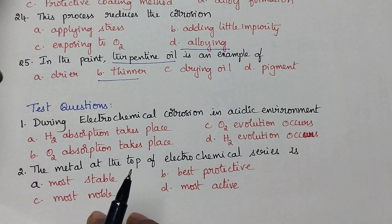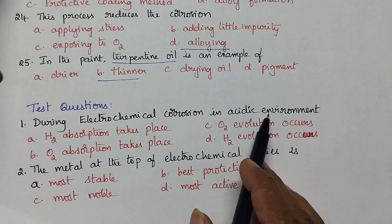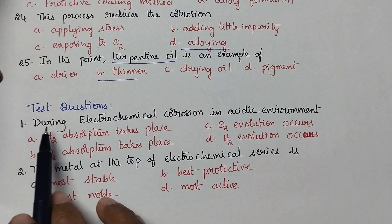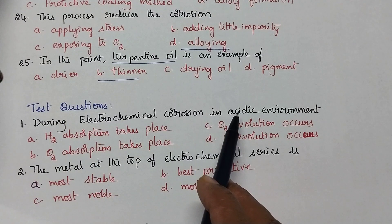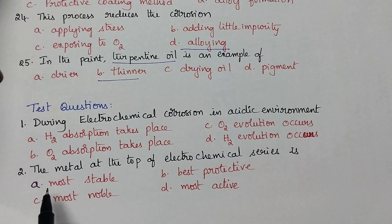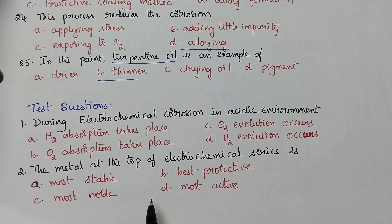Finally, two test questions to conclude this video: during electrochemical corrosion in the acidic environment, identify what happens; and if a metal is present at the top of the electrochemical series, what is its behavior? If you like the video, don't forget to like, share and subscribe. Thanks for watching. Have a nice day.